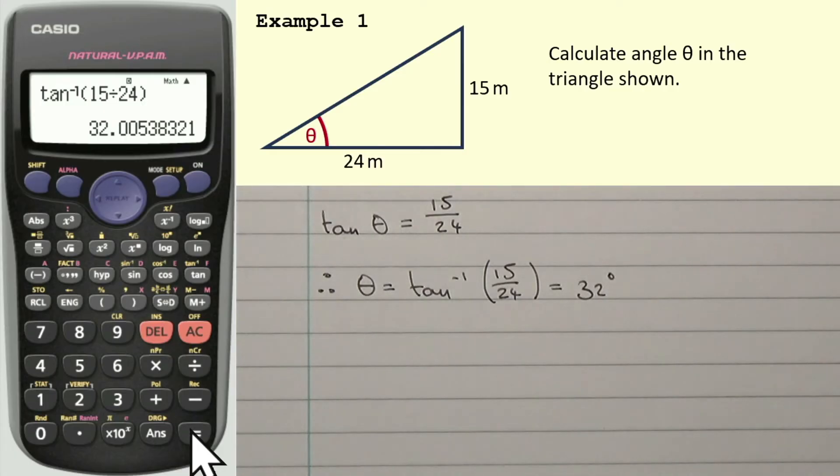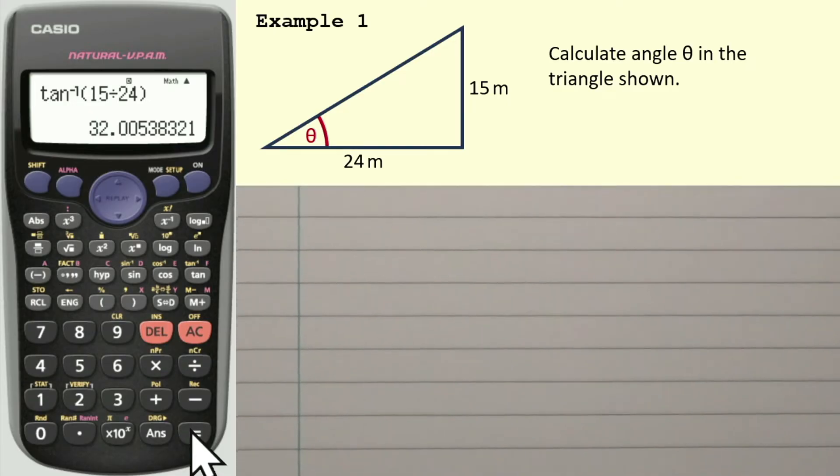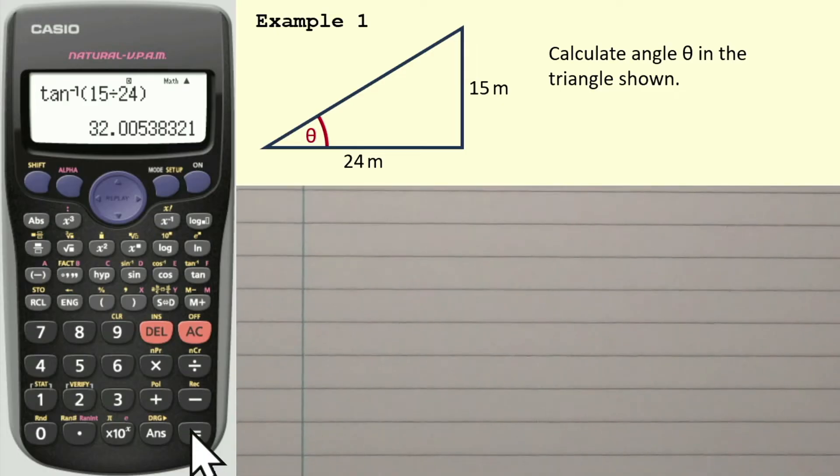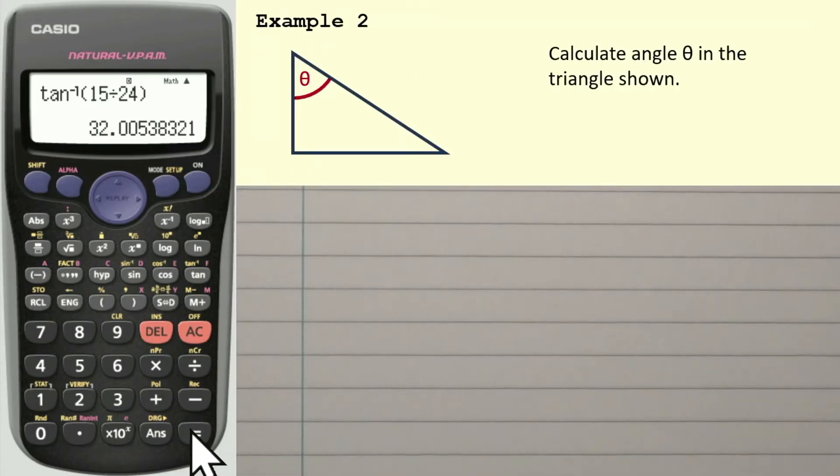There we have it. There's the first example. Now in subsequent videos, I'll be going over how to maybe change that angle and express it as a bearing. I'm not going to do that just now. I just want to see that you understand the sine, cosine and tangent function. I'm going to get on to the second example.